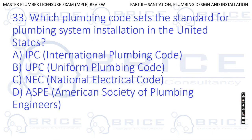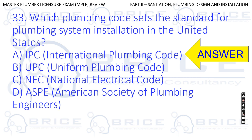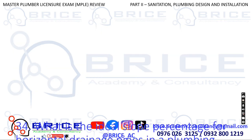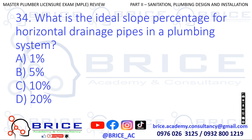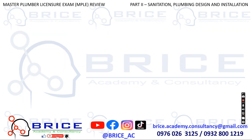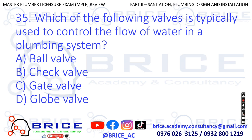Question 33: Which plumbing code sets the standard for plumbing system installation in the United States? A. IPC International Plumbing Code, B. UPC Uniform Plumbing Code, C. NEC National Electrical Code, D. ASPE American Society of Plumbing Engineers. Answer: A. IPC International Plumbing Code. Question 34: What is the ideal slope percentage for horizontal drainage pipes in a plumbing system? A. One percent, B. Five percent, C. Ten percent, D. Twenty percent. Answer: A. One percent.